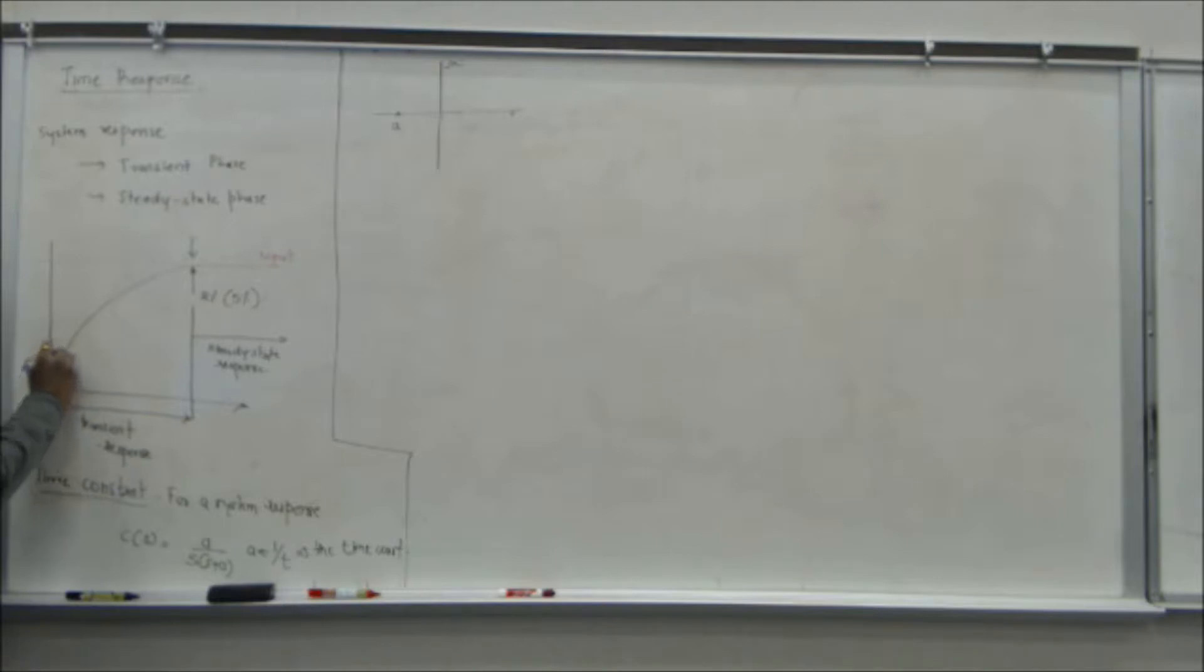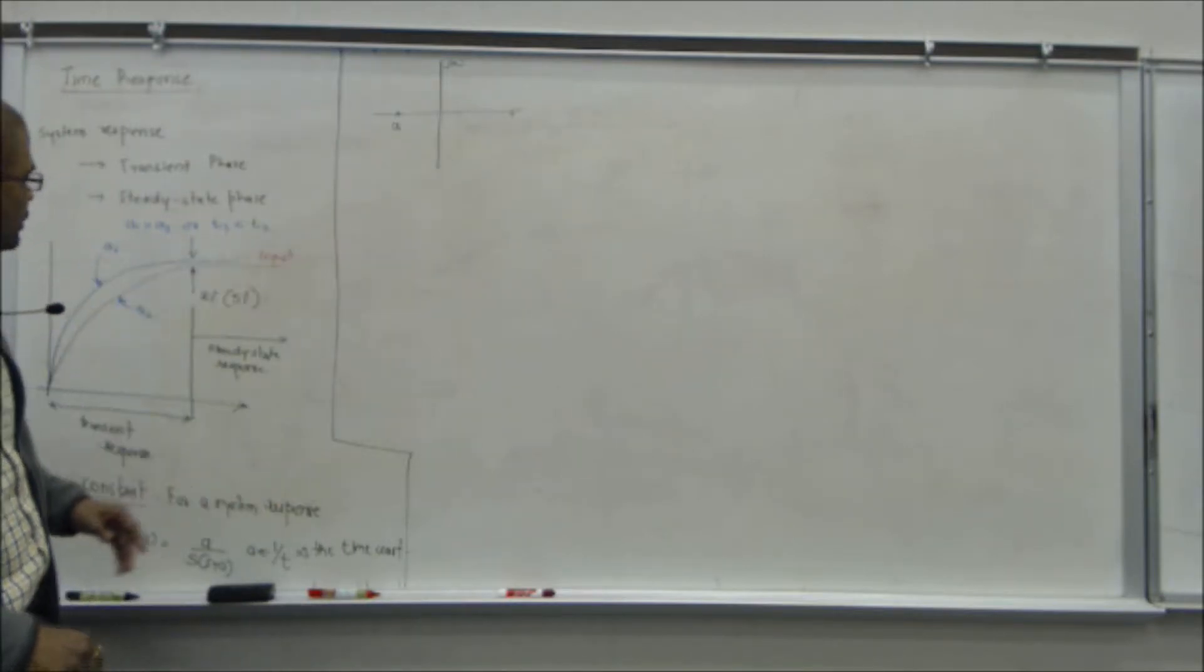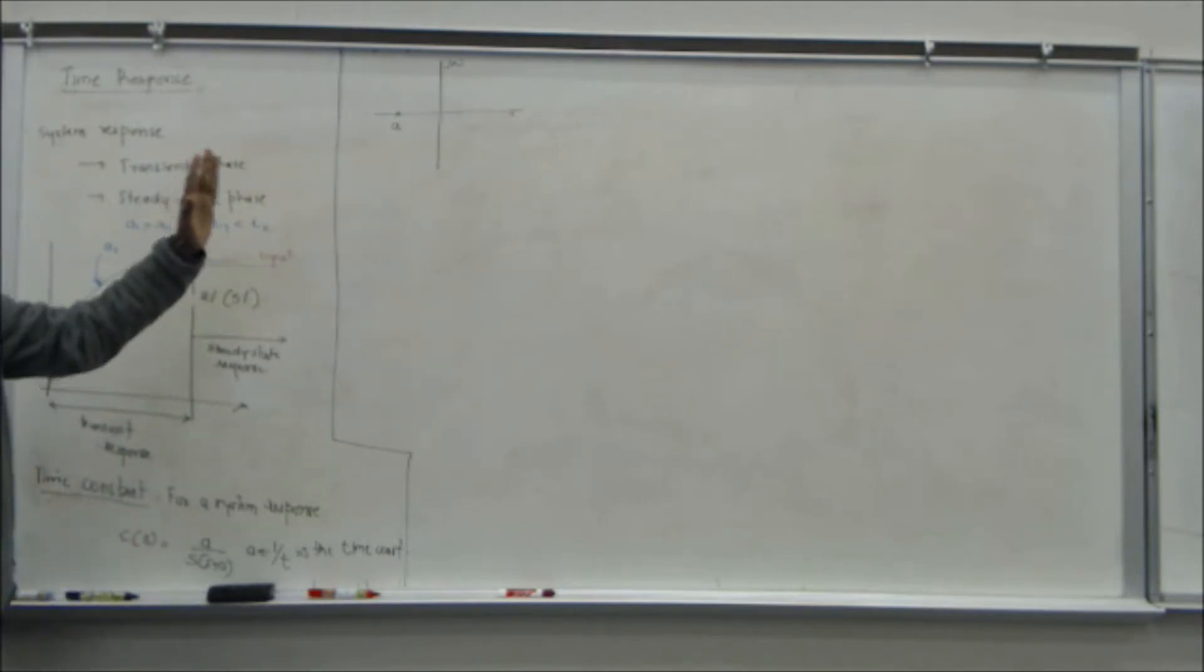For example, if this is A1 and this is A2, A1 is greater than A2 or T1 is smaller than T2. So the farther this is, the system is going to respond much faster, the transient response is going to be much faster. How big is A? The bigger the A value, how much more negative it is, it's going to respond that much faster. The time constant T will be that much smaller.